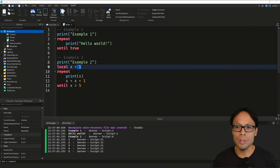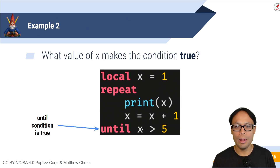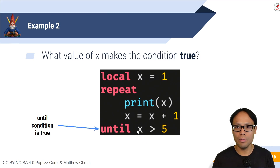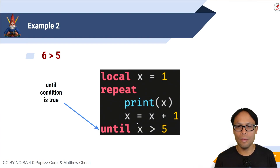Now let's think about this situation. What value of x is going to make our condition true? When our condition is true, that is when our loop finally ends. Our condition is x greater than five, so what value would x have to be to make this condition true? That would be six, because six is greater than five — and finally our condition is true.